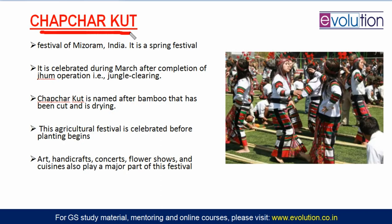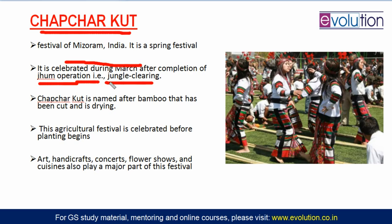The first topic is Chapchar Kut. The Mizoram and many other northeast tribes are still involved in Jhoom cultivation — they clear the forest, sow their crops, and then harvest. That is called Jhoom cultivation, or slash and burn, because they cut trees from the jungle and use that land for agriculture. This festival is celebrated during March, after the Jhoom operation is completed.